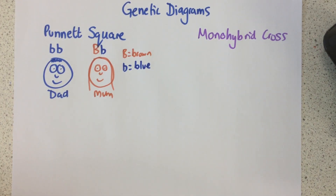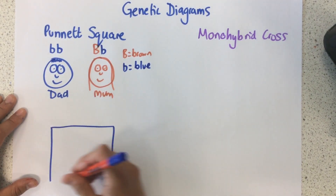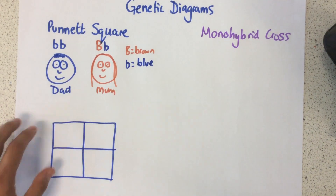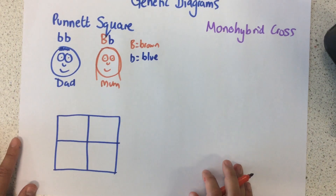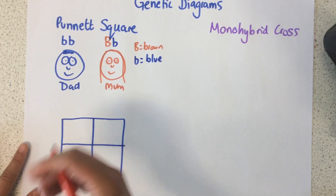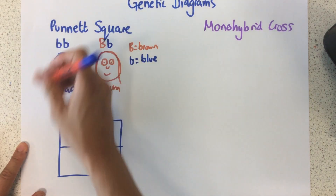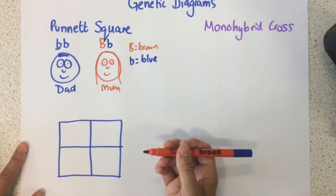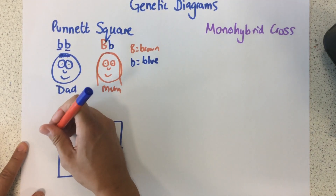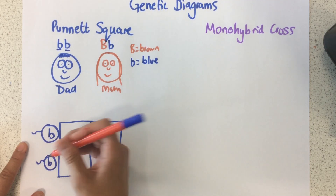The whole point of a Punnett square is to determine what the percentage chance is of the baby either having blue eyes or brown eyes. When the dad, who produces sperm cells, there's a 50% chance that one allele will be in a sperm cell and a 50% chance that the other one will be.